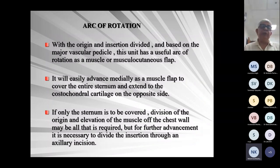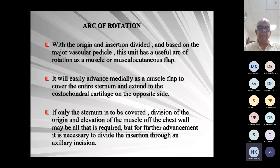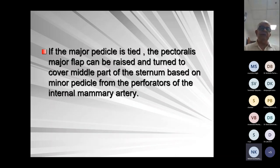Regarding the arc of rotation of the pectoralis major: with the original insertion divided and based on the major vascular pedicle, the unit has a useful arc of rotation as a muscle or myocutaneous flap. Here we use only muscle. It is easily advanced to cover the entire sternum, extending to the costochondral cartilage on the opposite side. If only the sternum needs to be covered, division of the origin and elevation of the muscle is all that is required — it can be used as an advancement flap or a cross-over flap. The major pedicle is tied and the pectoralis major muscle flap can be raised and turned on itself to cover the middle part of the sternum based on the minor pedicle from the perforators of the internal mammary artery. Ironically, the more debridement you do, the easier it is to raise the flap.